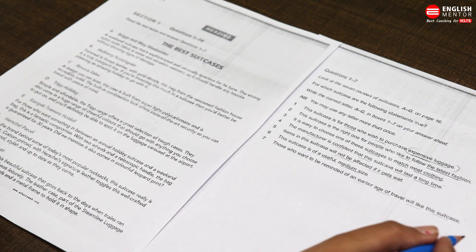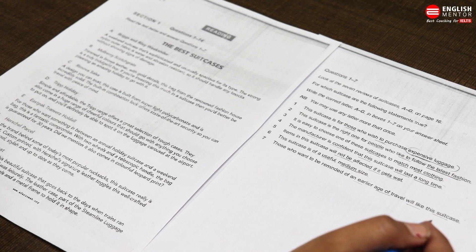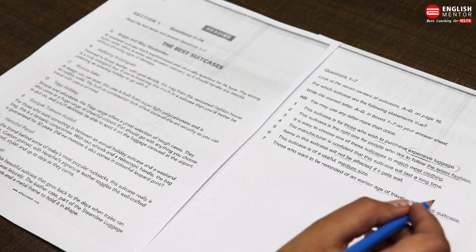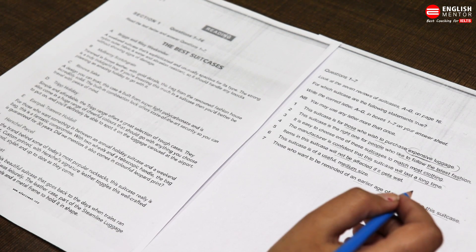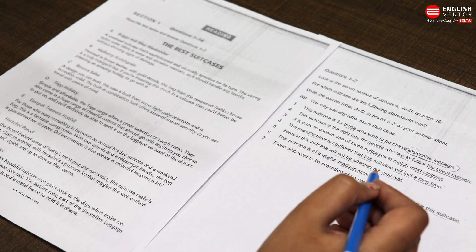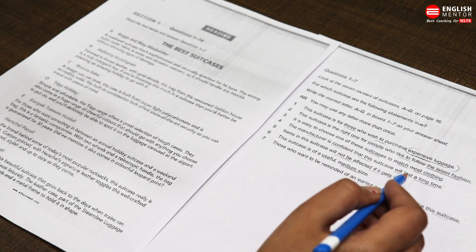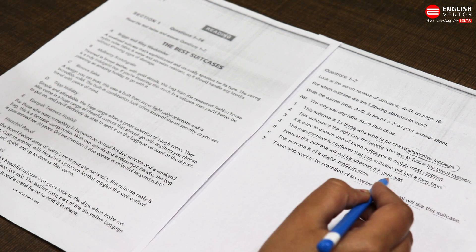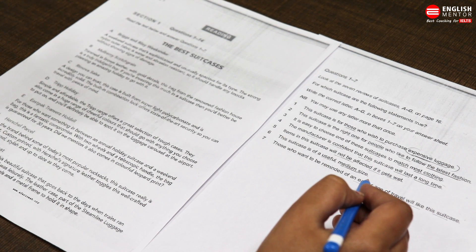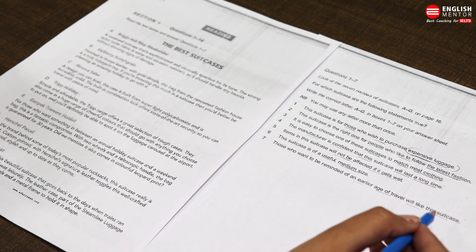Many students say they can't remember the keywords. If you are applying the RUP method for the first time, then yes it will be difficult to remember the keywords. But when you exercise the same method for two or four readings, you will become habitual of this method and it will be really beneficial for you in solving the reading with accuracy. The keywords to remember: one is expensive, one is latest fashion, one is match with clothing, one is durability, one is resistance, six is medium size and useful, and seven is earlier age of travel.